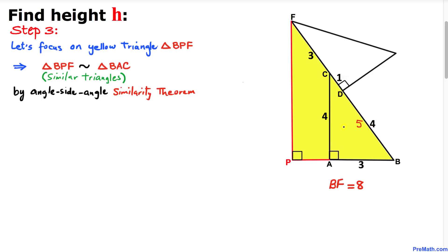We can see that these two right triangles—the first one is BPF and the other triangle is BAC—are similar triangles by angle similarity theorem. Both of these triangles are right triangles with 90-degree angles. This angle is in common for both triangles, and this side is common as well.